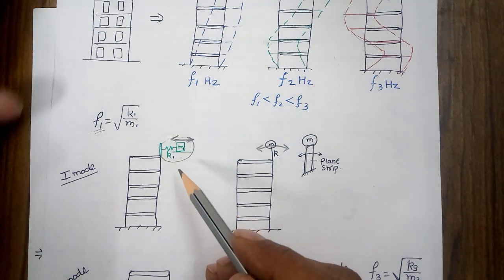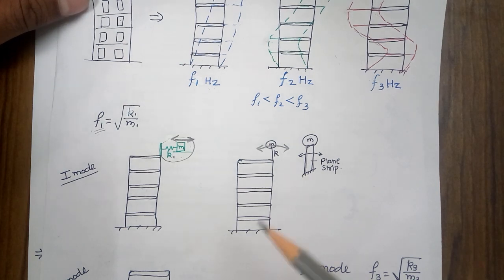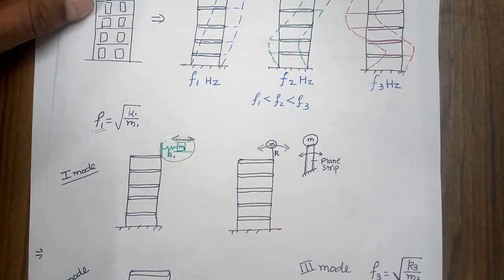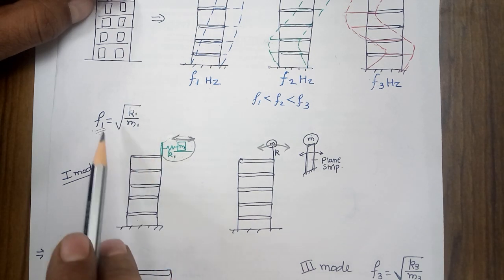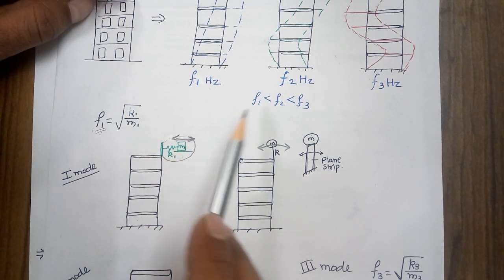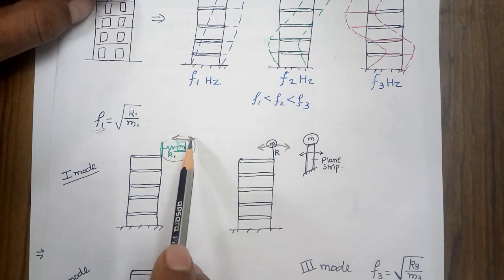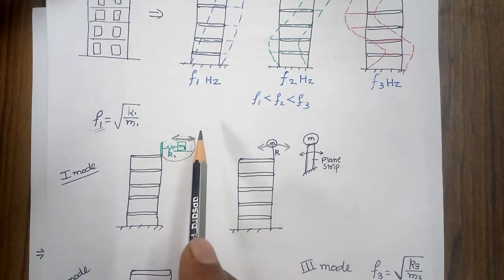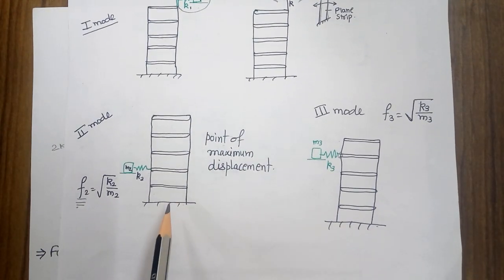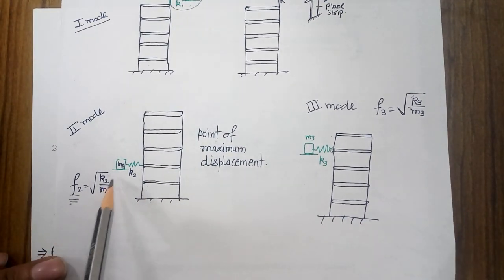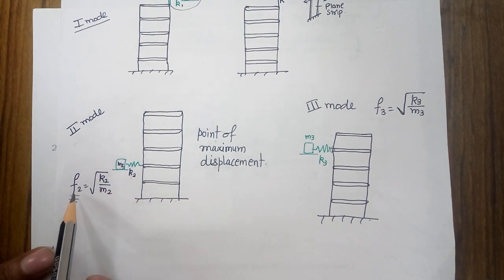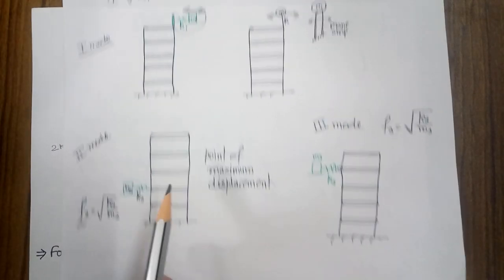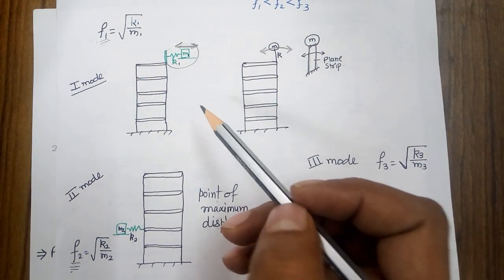A single vibration absorber works for a particular frequency only. We cannot use a single absorber for two different frequencies because it has a unique natural frequency. If I want to design a vibration absorber for the second mode, I can use a second system having mass m2 and stiffness k2, where √(k2/m2) equals the second natural frequency.